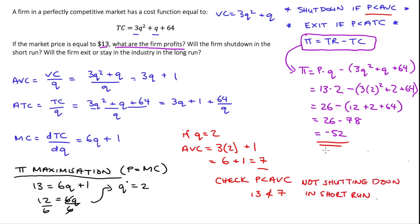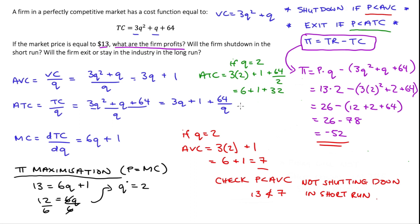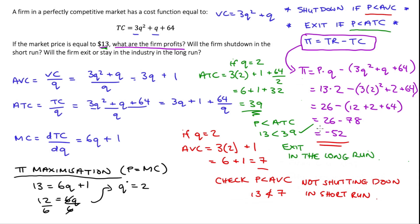We already have evidence the firm will exit in the long run due to negative profits, but let's verify using the ATC condition. With Q equals 2, average total cost equals 3 times 2 plus 1 plus 64 over 2 equals 6 plus 1 plus 32 equals 39. Since price (13) is less than average total cost (39), that condition is met and the firm will exit in the long run — negative profits arise whenever price is less than average total cost.